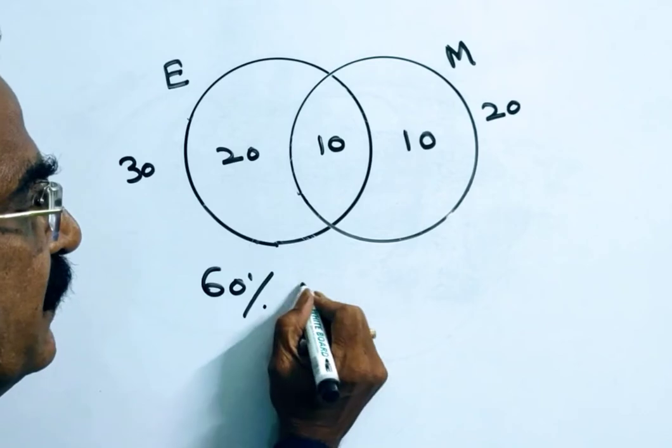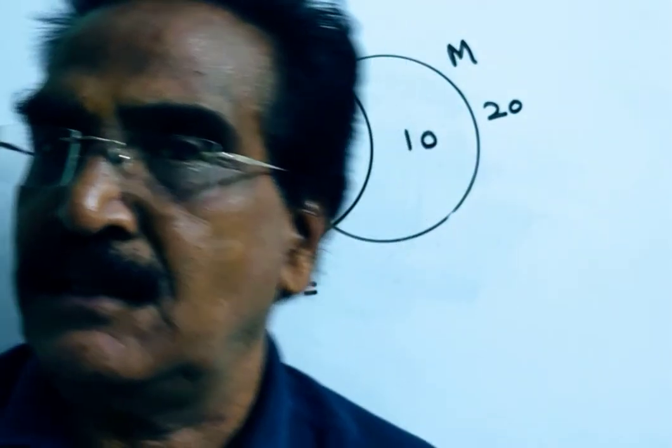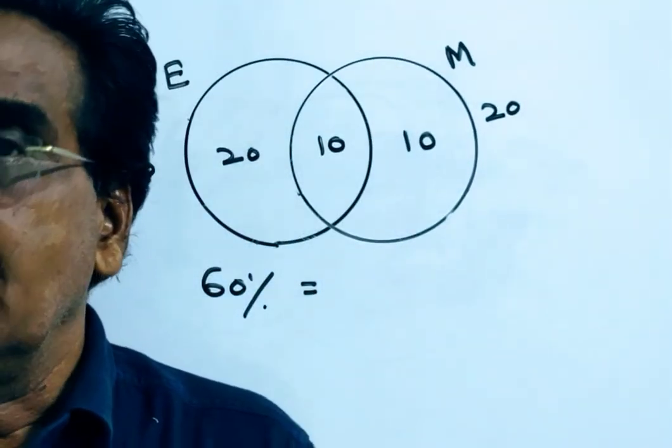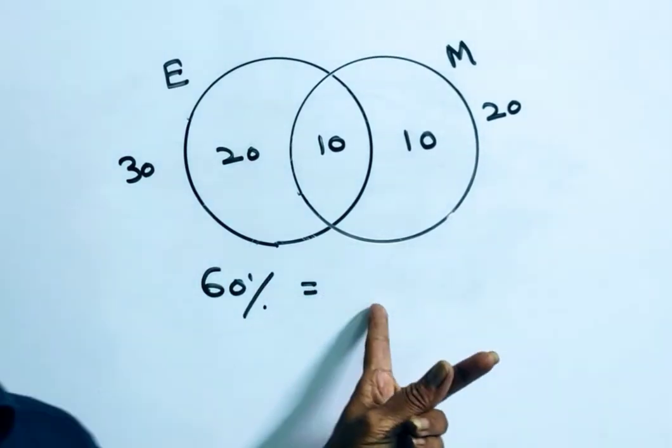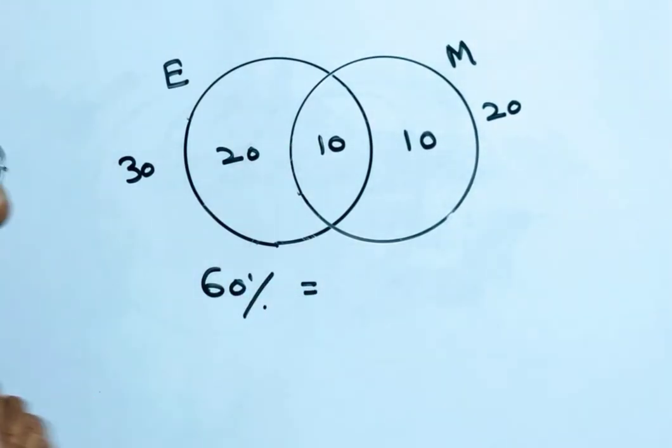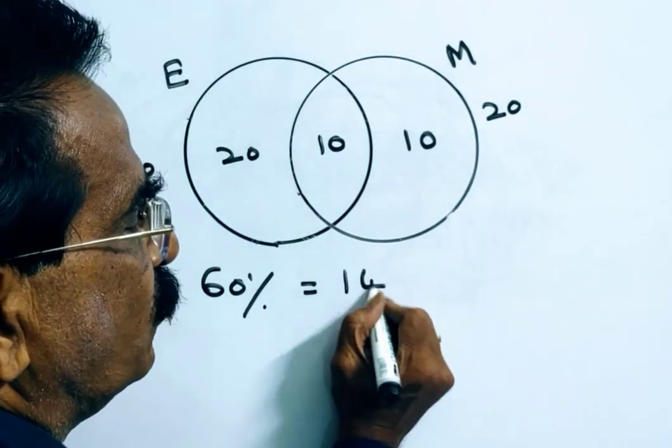It is given that 144 students passed in both subjects. So this 144 must be equal to 60 percent. 60 percent is equal to 144.